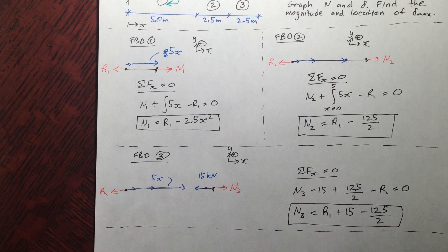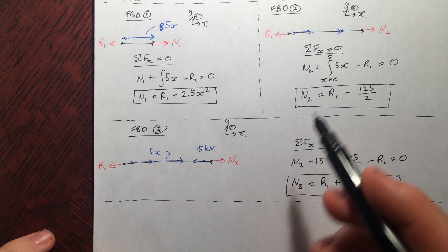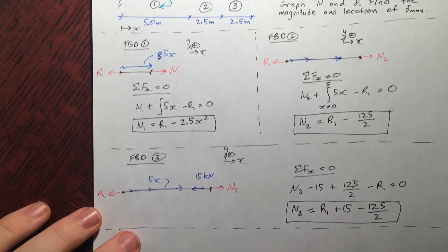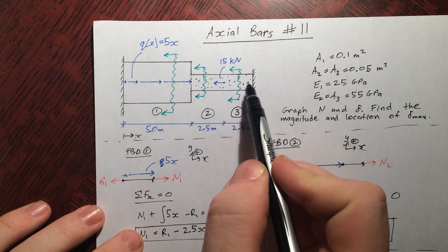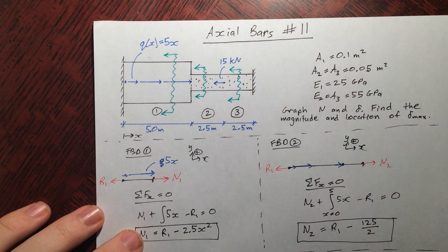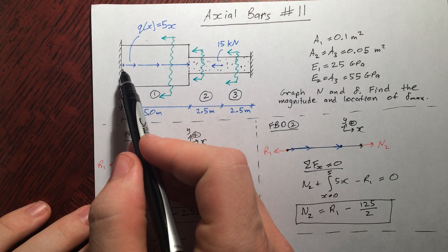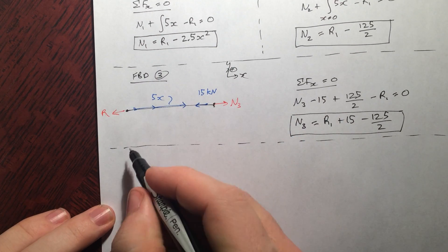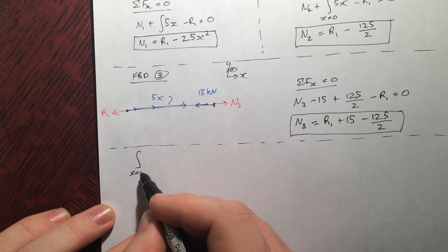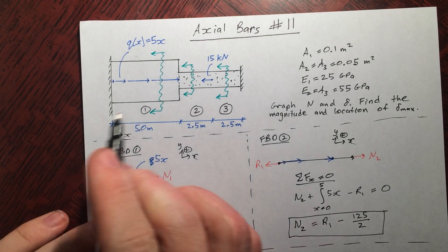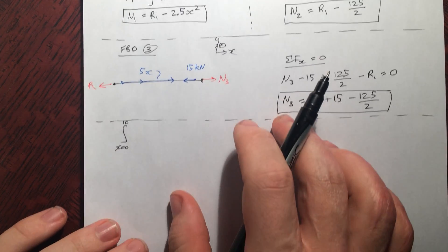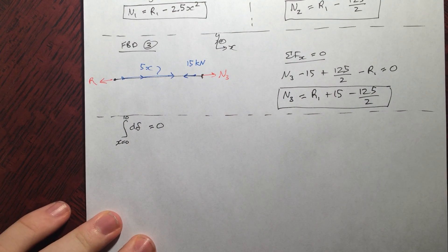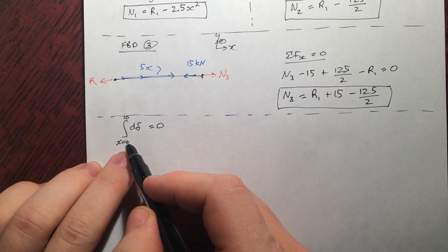We could go ahead and plot it and just keep R1 as a variable, but let's solve for R1. Now the only way you can do that, like I discussed in the previous videos, is by taking a look at the displacements. So since this bar, if you will, is stuck between two walls, we know that the sum of the displacements between here and here is going to be 0. So we can write that very simply. The sum of the displacements between x equals 0 and 10, up to the full length of the bar there, 5 plus 2.5 plus 2.5, it's 10, has got to be 0.